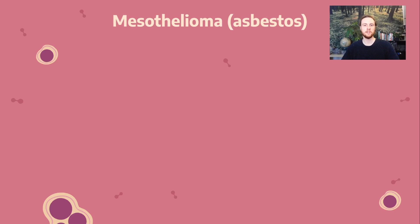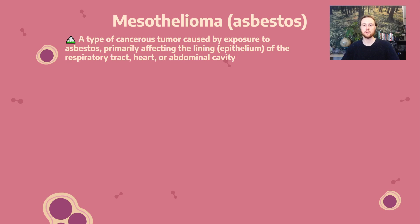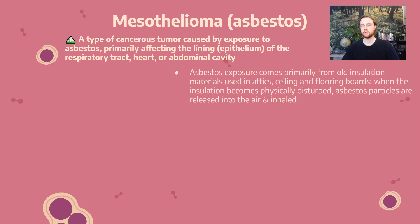Next, we'll talk about mesothelioma, a specific type of cancer that comes primarily from exposure to asbestos. When asbestos particles are inhaled and exposed to the respiratory tract, it often leads to the development of cancerous tumors in the lining or epithelium of things like the respiratory tract, the heart, or the abdominal cavity. The route of exposure is primarily old insulation — attics, ceilings, flooring tiles, or insulation around water heaters used to contain asbestos before we realized its carcinogenic effects. When those insulation sources are disturbed during renovation, if not done properly, asbestos particles can enter the air and be inhaled.